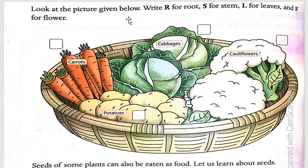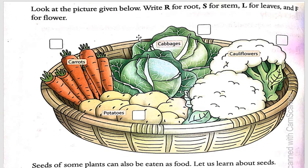Look at the picture given below. Write R for root, S for stem, L for leaves, and F for flower. You have small boxes here right next to each vegetable — you will write which part of the plant it is. If it is a flower write F, a leaf write L, a stem write S, a root write R. This is the homework, so you will do it on your own.